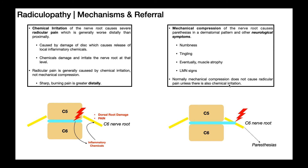By definition, to have a true radiculopathy and not just radicular pain, you have to have those neurological symptoms. One important question: if you have a true radiculopathy, do you have to have all three neurological symptoms — the dermatomal problem, the myotomal problem, and the hyporeflexia? No, you don't have to have all three. In fact, you just have to have one. As long as you have one neurological symptom — a positive neuro screen — you can probably say, maybe with some other tests, radiculopathy.